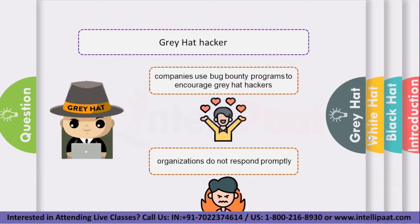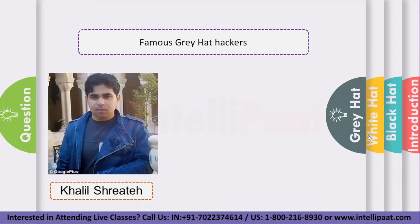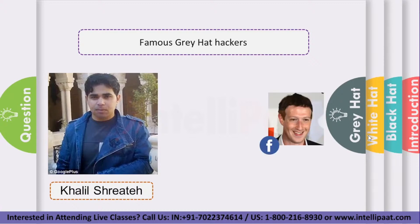A well-cited grey hat hacker example took place in 2013, where Khalil Shatay, an unemployed computer security researcher, hacked the Facebook page of Mark Zuckerberg. His motivation was to force action to correct a bug he discovered which allowed him to post on a user's page without their consent. He had informed Facebook of this bug only to be told it was not a bug. But after this incident, Facebook corrected the vulnerability, which could have been a very powerful weapon in the hands of professional spammers. Shatay was not compensated by Facebook's white hat program as he violated their policies.